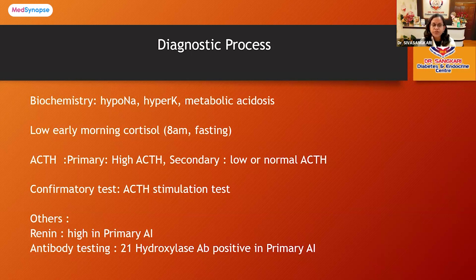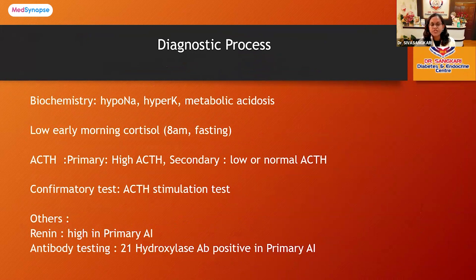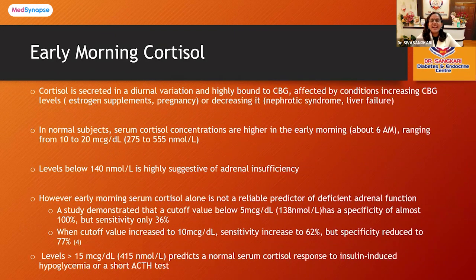As a confirmatory test, we perform the ACTH stimulation test — also called the Short Synacthen Test. Additional tests include renin, which is elevated in primary adrenal insufficiency, and the 21-hydroxylase antibody, which is positive in primary adrenal insufficiency. Since cortisol is highly bound to binding globulin, we must ensure the patient is not on estrogen supplements or has conditions like nephrotic syndrome or liver failure before measuring cortisol.